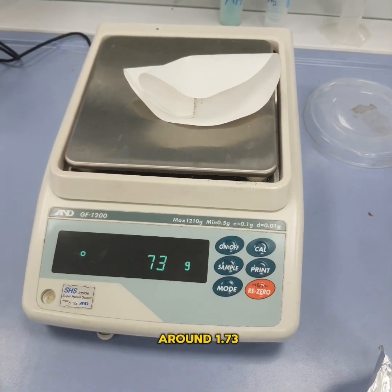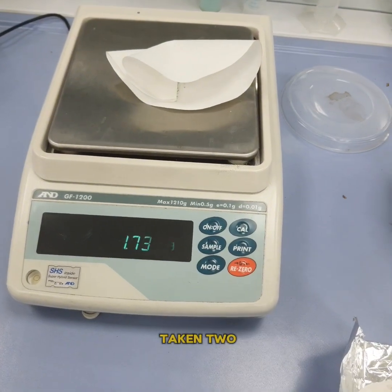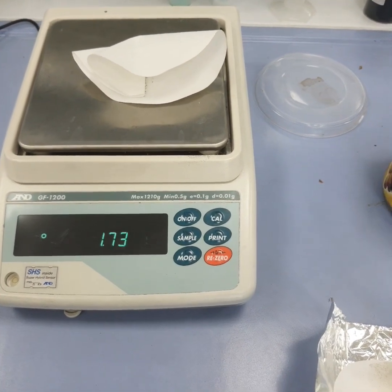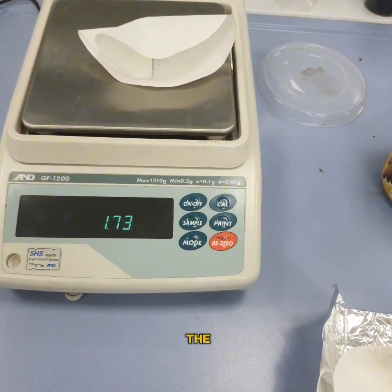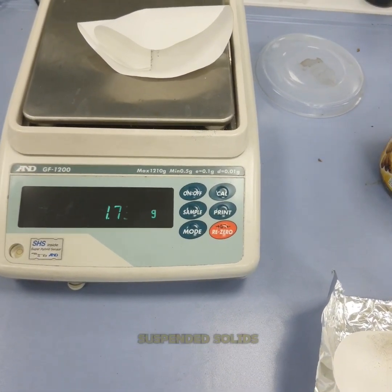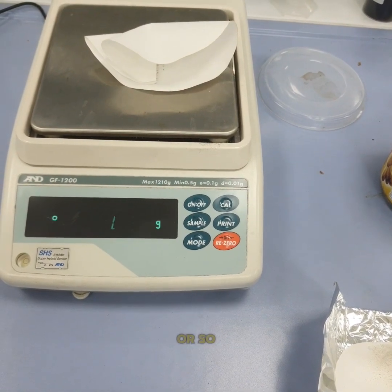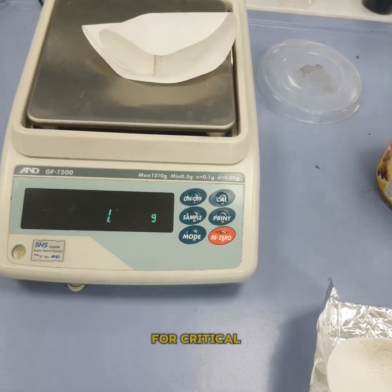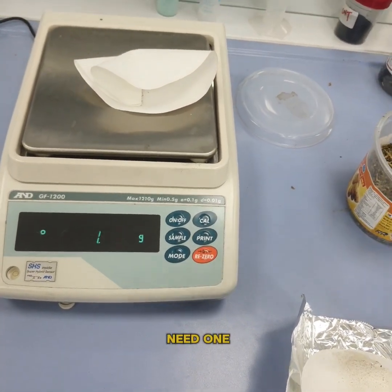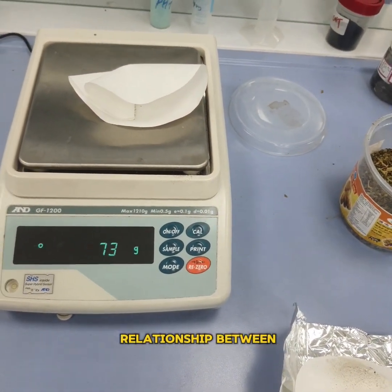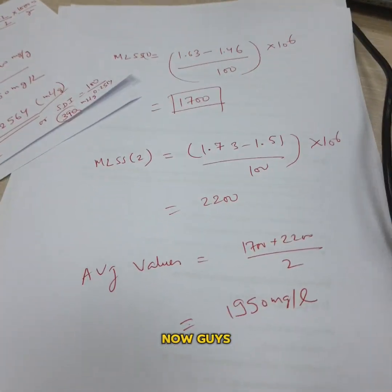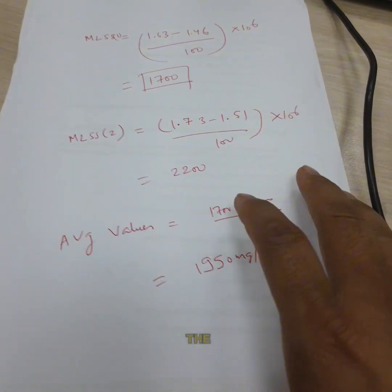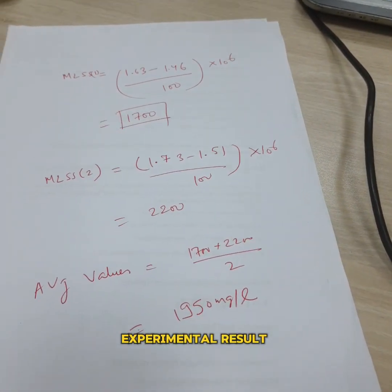The second one is around 1.73 grams. What we will do - we have taken two samples so we will take the average of both of them. And also if you want to find out the mixed liquor volatile suspended solids or MLVSS, we need to burn that. So we will skip that step because for the calculation of SVI and SDI we just need one of them, because there is a relationship between MLSS and MLVSS.